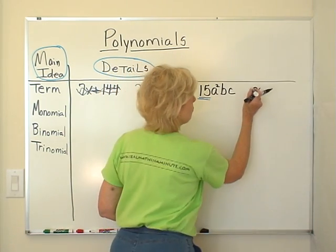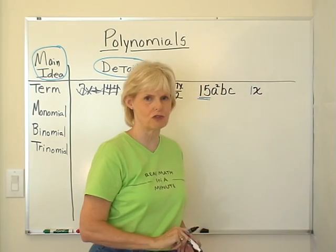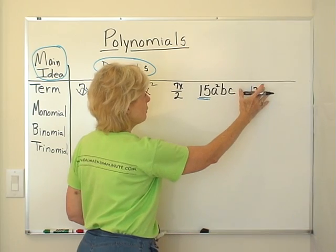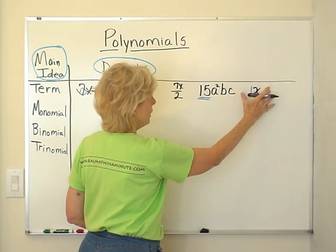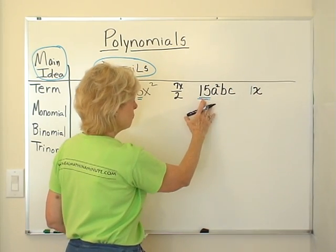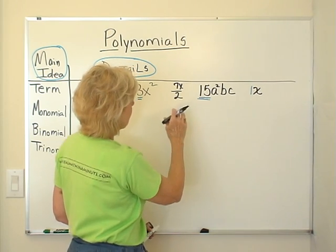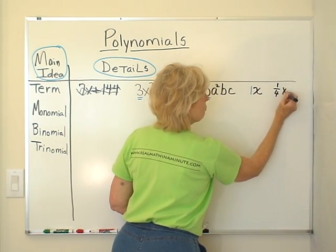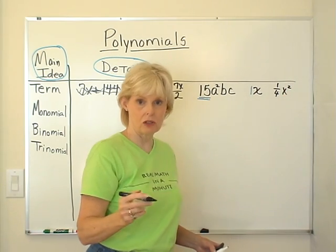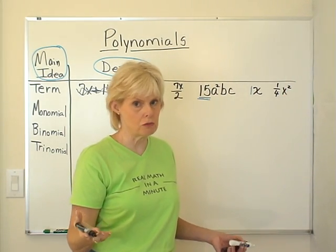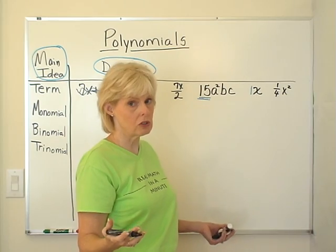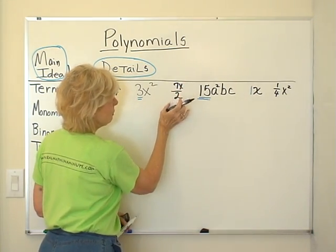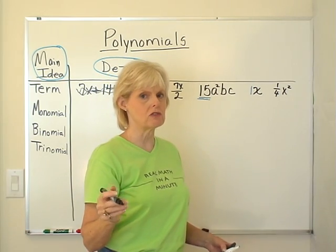And technically, it does have a number in front. Remember, it has an understood 1 that we don't necessarily see. If it doesn't have a power in exponent, it could. It doesn't have to. It might have a number in front. It might not. It could have a fraction like 1/4 x squared. And that's still a term because nothing's added or subtracted to it. This one might confuse you because it's got two pieces, but they're not added or subtracted, so it's a term.